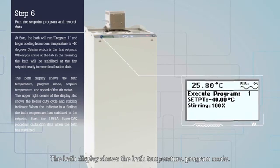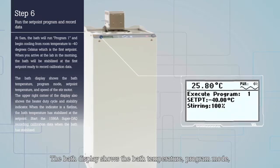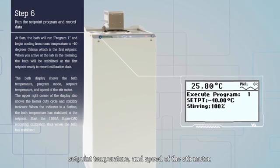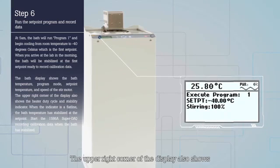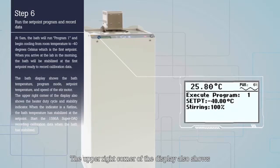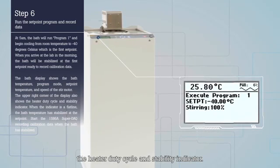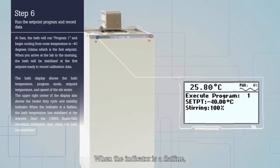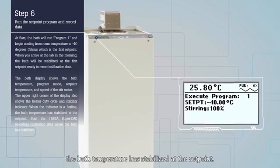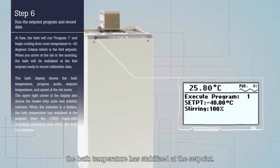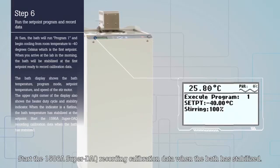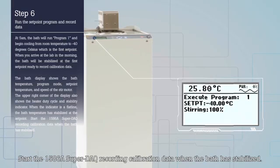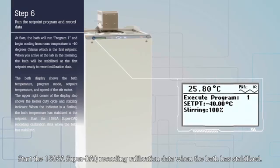The bath display shows the bath temperature, program mode, set point temperature and speed of the stir motor. The upper right corner of the display also shows the heater duty cycle and stability indicator. When the indicator is a flat line, the bath temperature has stabilized at the set point. Start the 1586 Super DAC recording calibration data when the bath has stabilized.